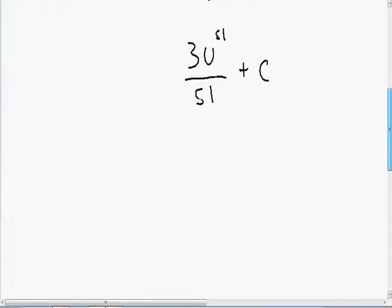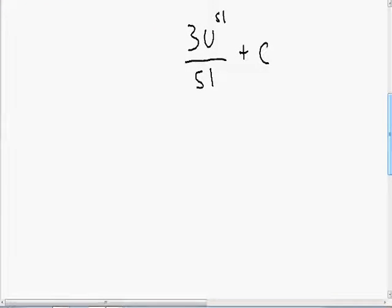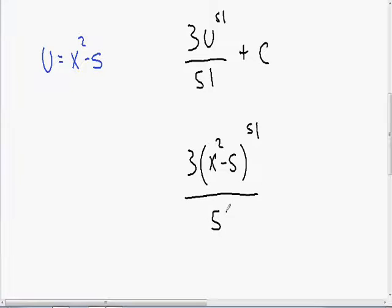Now moving on to our last step. We need to replace our u in terms of x. So just to remind you from before, our u was equal to x squared minus 5. So instead of multiplying 3 times u to the 51 power, I'm going to multiply 3 times x squared minus 5 to the 51 power. And this is all over 51. And we can't forget to add our c.